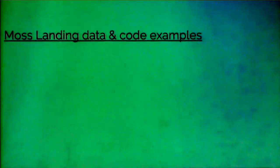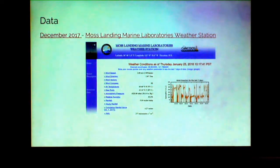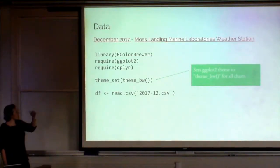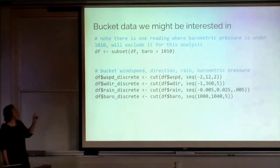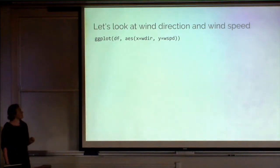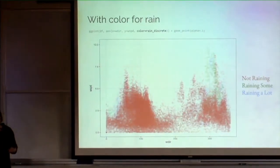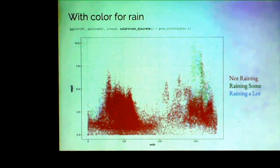I want to get into some code examples. I found some data from here — pulled down December 2017 weather data. This is going to be an example in R. I set the theme to black and white, read in the data — there's wind speed, wind direction, barometric pressure — and made some discrete buckets to use later. Let's look at wind direction and wind speed with a scatter plot, using opacity alpha equals 0.1 because there's a lot of data points. Then I add color for whether it's raining or not raining.